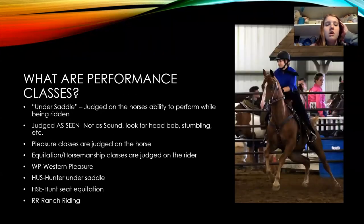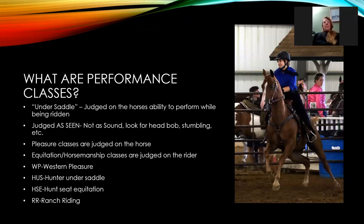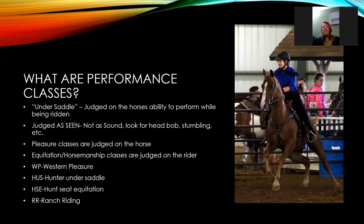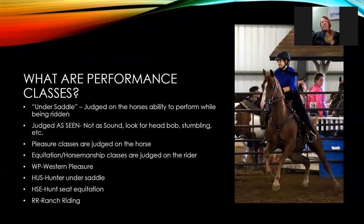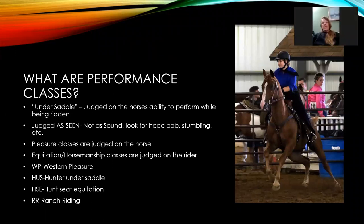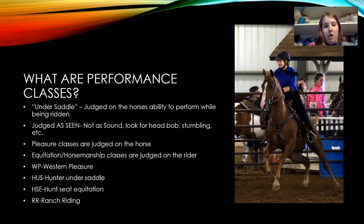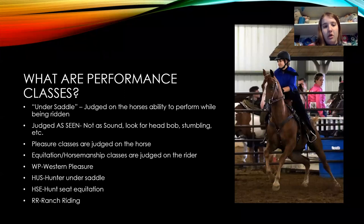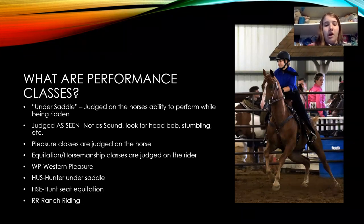So what are performance classes? Performance classes are undersaddle classes where you're judging on the horse's ability to perform while being ridden. When you're judging them, you're judging them as seen, but not as sound. When judging a halter class, you're assuming they're sound and just judging on conformation faults. Whereas in a performance class, you're judging them on how they're being seen — if you see an unsoundness, you're going to automatically place them at the bottom of the class. Things like bobbing their head or stumbling would indicate unsoundness and move that horse to the bottom.